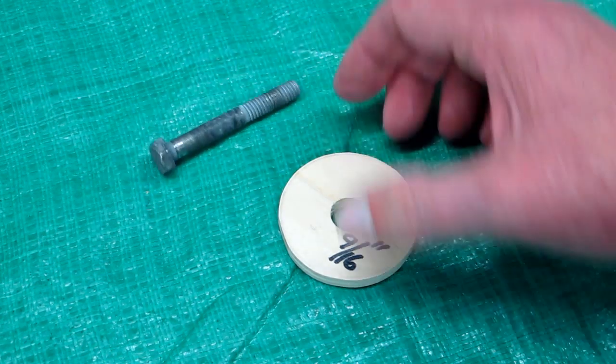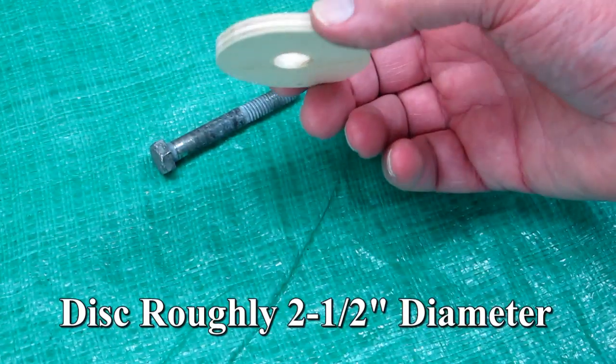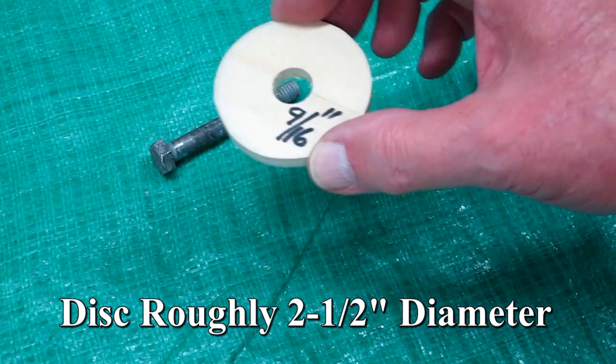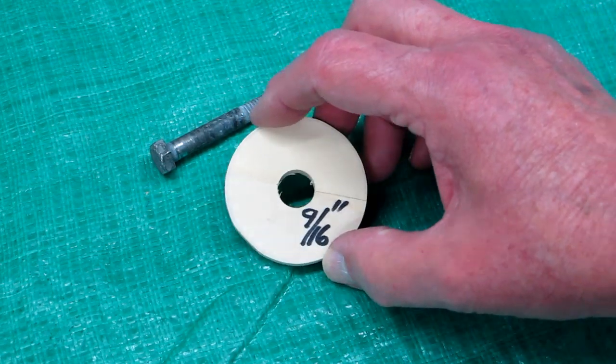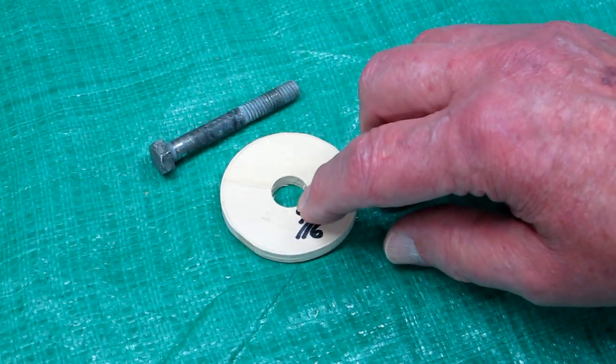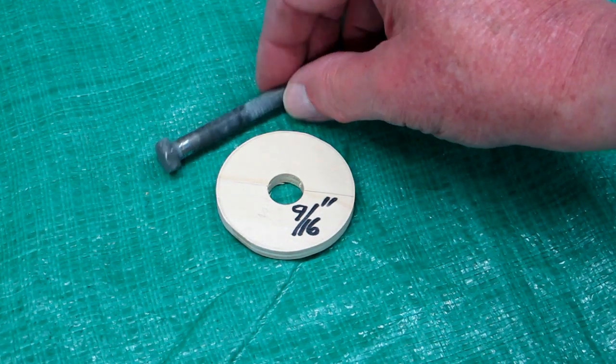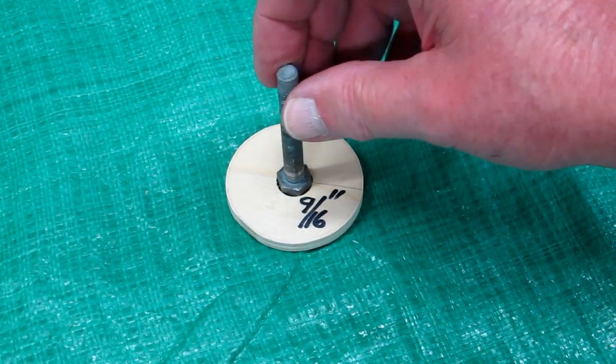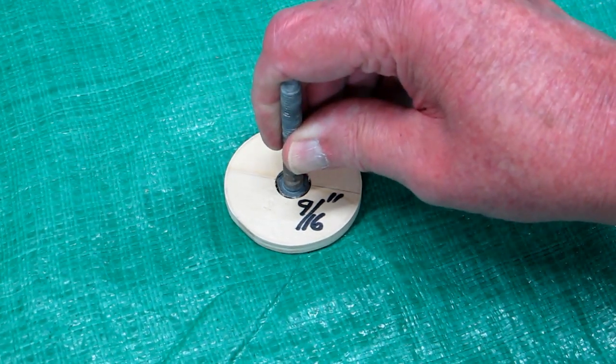A 5/16 bolt, piece of quarter-inch plywood, preferably good plywood like Baltic birch, and that's a 9/16 hole drilled in the center of it. And the head of that 5/16 bolt will just go in there.